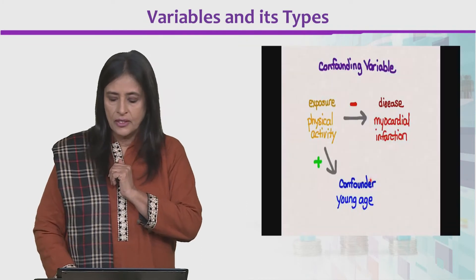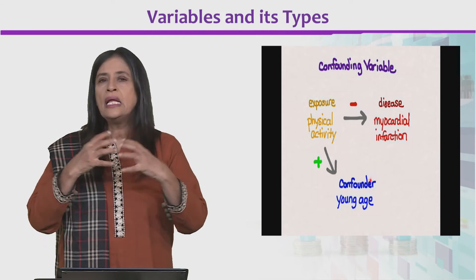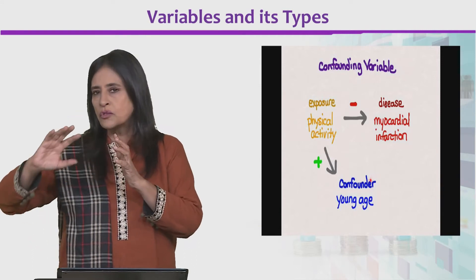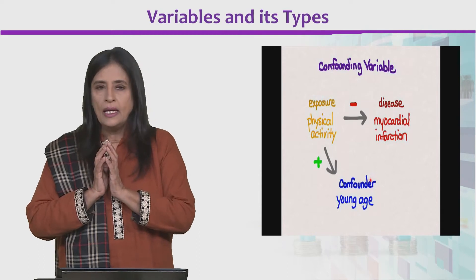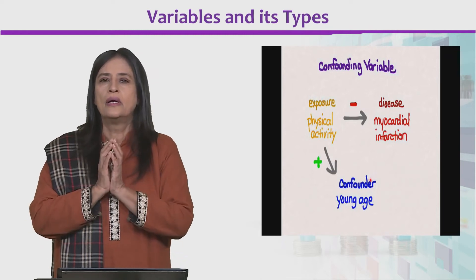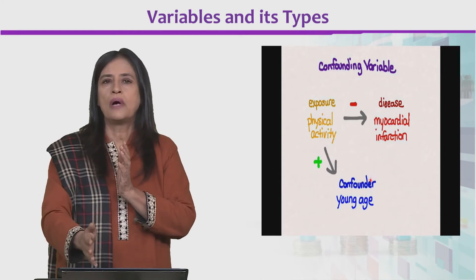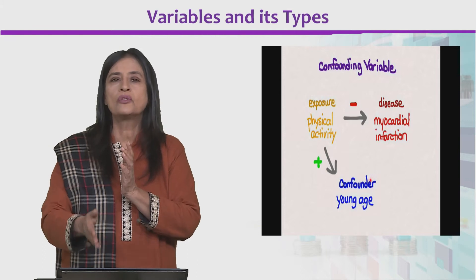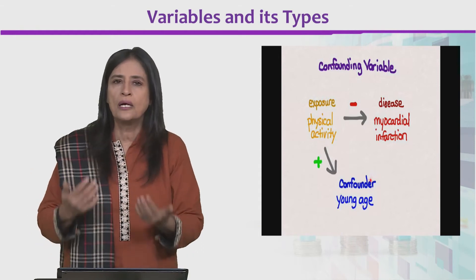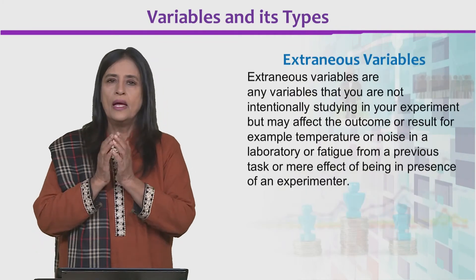For example, it is said that physical activity reduces the chances of heart disease. But there is a confounding factor here: the age of the people being studied. If age is not controlled, it will create confounding, because the effect of exercise on heart disease in younger people may not be the same as in older people. So such things need to be controlled.